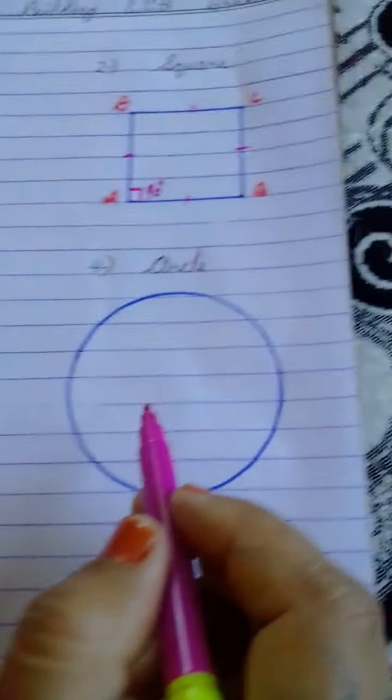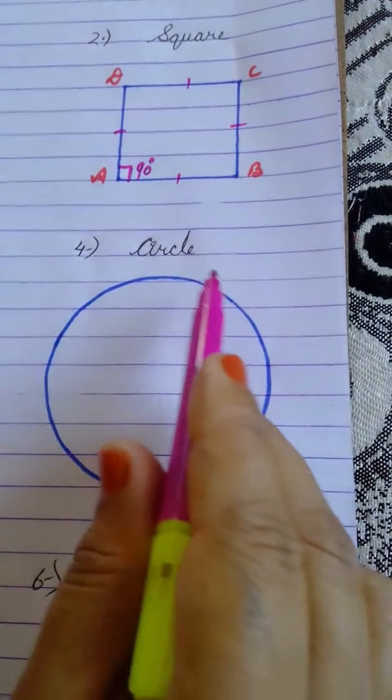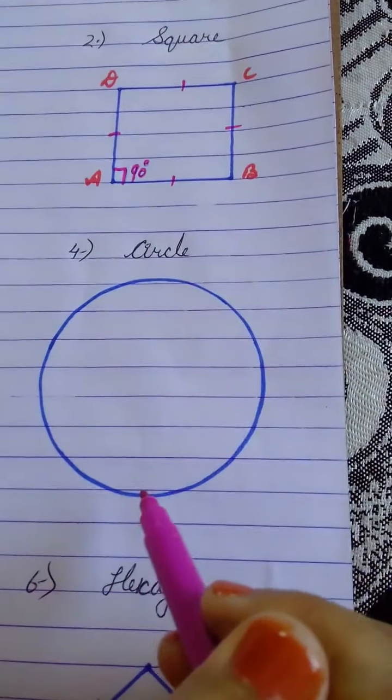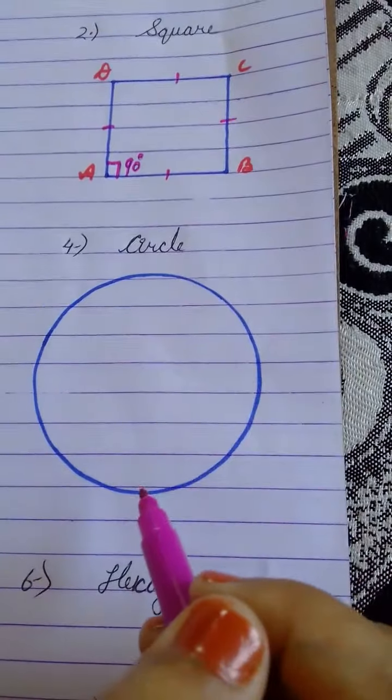Next is our circle. All of you have seen a bangle. So it is circular in shape. A circle has no edges and no corners.